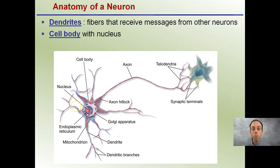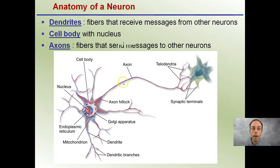It's important to remember that this message will only travel in one direction, starting with the dendrites going to the cell body, ultimately leading down the axon. The axon is the fiber that sends the message to other neurons. You can see it also branches at the end. Signals go in through the dendrites, down the axon, and are passed on to other neurons.